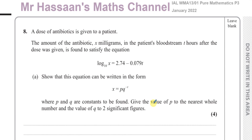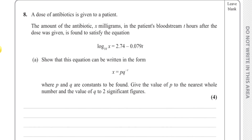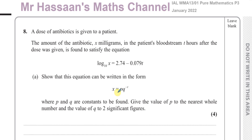Welcome back, this is Mr Hassan's Maths channel. I'm now answering question number eight from the January 2022 Pure Mathematics P3 International A-level exam. We have a question about logarithms. A dose of antibiotics is given to a patient; the amount of the antibiotic x milligrams in the patient's bloodstream t hours after the dose was given satisfies log base 10 of x equals 2.74 minus 0.079t. Show that this equation can be written in the form x equals p times q to the power of minus t.